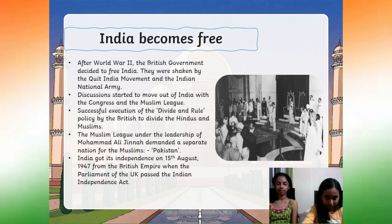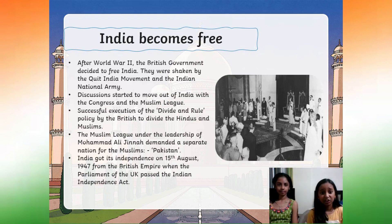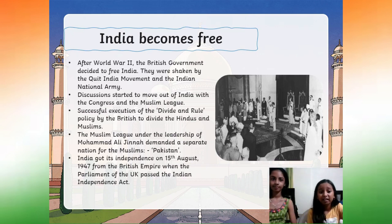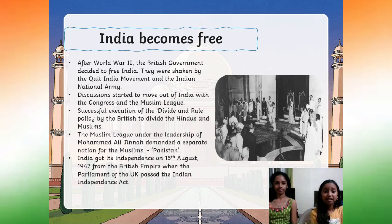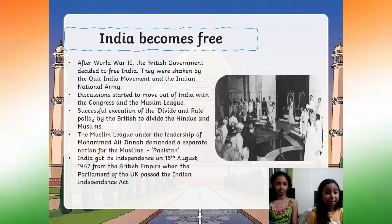India after independence. After World War II, the British government decided to free India. They were shaken by the Quit India Movement and the Indian National Army. Discussions started to move out of India with the Congress and the Muslim League. Successful execution of the divide-and-rule policy by the British divided the Hindus and Muslims. The Muslim League under Muhammad Ali Jinnah demanded a separate nation for the Muslims — Pakistan. India got its independence on 15 August 1947 when the Parliament of the UK passed the Indian Independence Act.